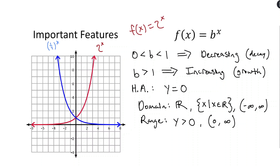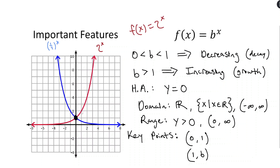Let's identify key points — two points that you can immediately identify just by looking at a function of this form, without plugging anything in. The first is (0, 1): no matter what the base is, raising it to the zero power gives 1. The second is (1, b) — raising anything to the first power gives itself. So for 2^x the key points are (0,1) and (1,2); for (1/2)^x they are (0,1) and (1, 1/2).